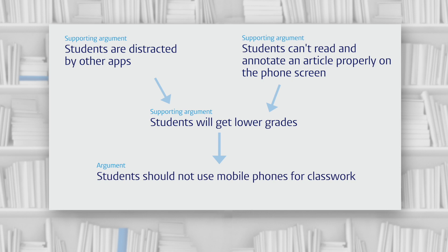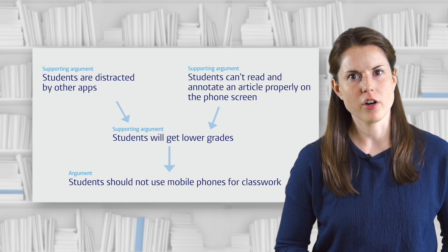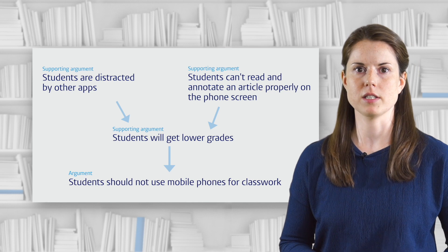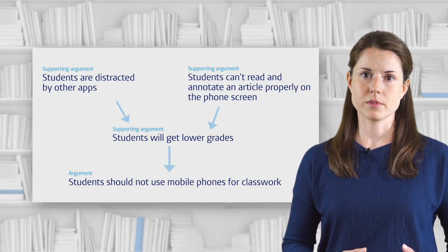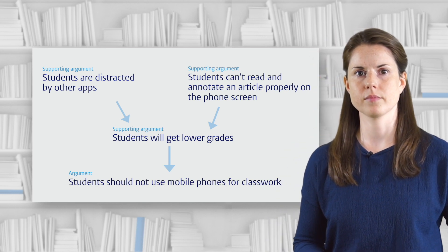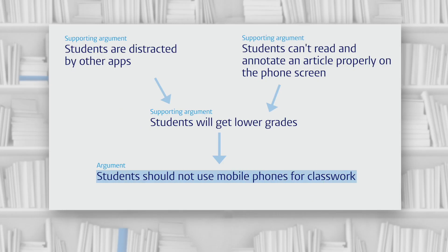When you collect your arguments, think carefully about the logical connections between them. Are they all independent arguments, or do some of your arguments depend on others? Another way to improve logic in your argumentation is to make sure that you're not missing out any steps. When we miss out steps, we risk not taking our reader with us in our argument. If you look at this part of the argumentation again, you'll see that there's actually a logical step missing.